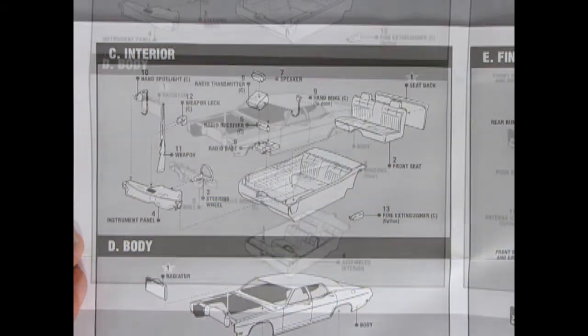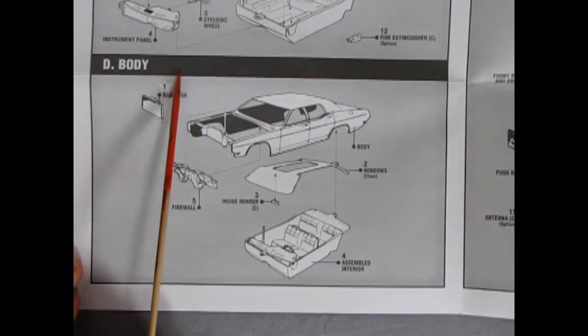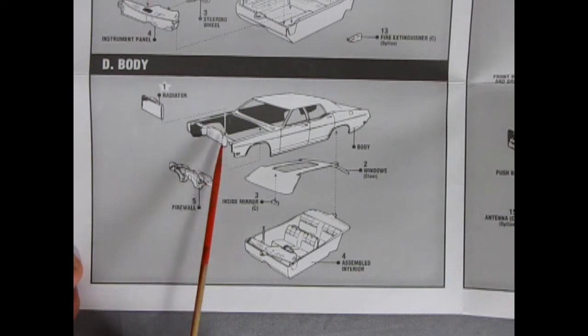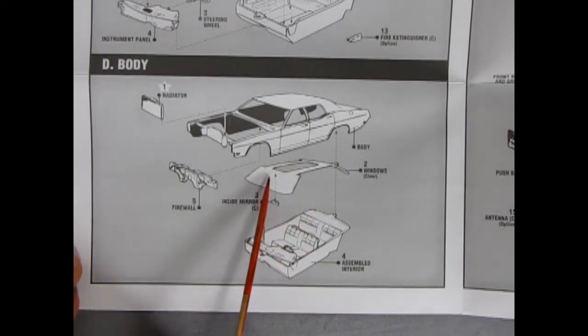Next up we got the body of this great kit with our radiator going in here to our radiator support which is molded into our four-door body. There's our windows and a little inside mirror here for the rear view, a firewall to keep us cool from the engine, and then our assembled interior will pop up in there.